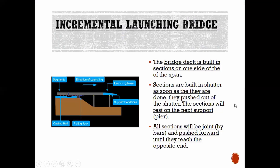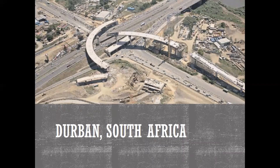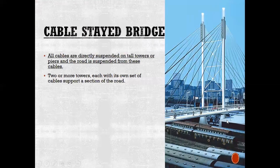Then there's the incremental launching bridge. The bridge deck is built in sections on one side of the span, and the sections are built in shutters. As soon as they are done, they are pushed out of the shutter. The sections rest on the next support or pier, and all sections are joined by bars and pushed forward until they reach the opposite end. So you build one segment, push it forward, build the next one, push it forward, and so on. This is an example of how it was done in Durban.